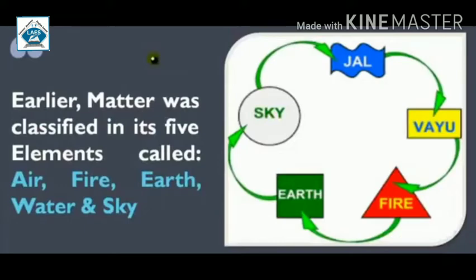So, our earlier philosopher, Indian philosopher, they classified matter in five elements. Air, fire, earth, water and sky. ये पांचों elements की help से हमारा matter बनता है. All the living things as well as non-living things are made up of these five elements.